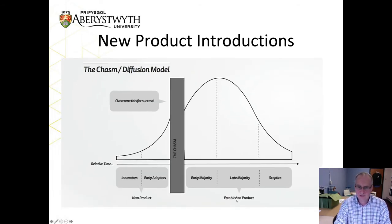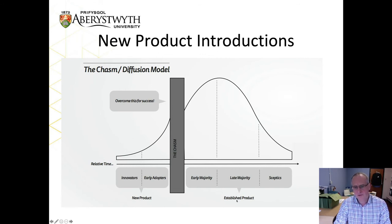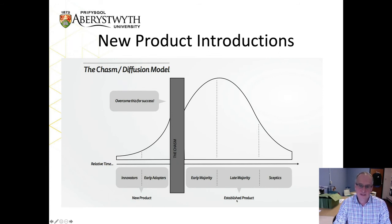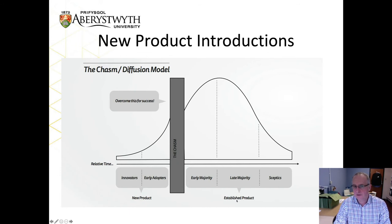In the chasm diffusion model, innovators and early adopters embrace the product, but the product never reaches the early majority. A perfect example is the Windows Phone — Microsoft's attempt to enter the smartphone market — and similarly Amazon's Fire Phone. The innovators and early adopters took them on, but they hit the chasm because the early majority felt Android or Apple iOS was a better solution. Be aware that these models support the understanding of the structure and strategy of these activities.